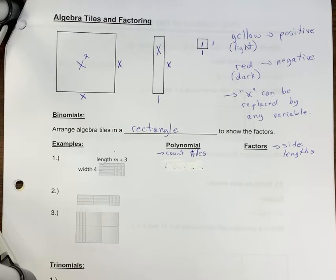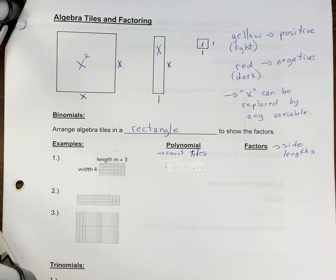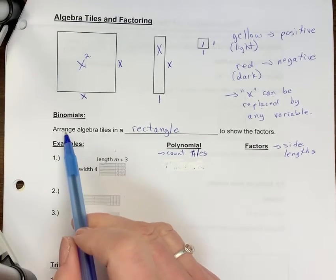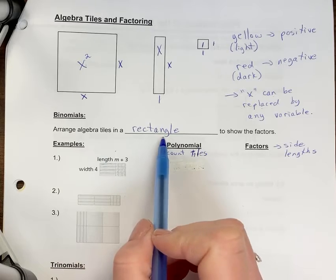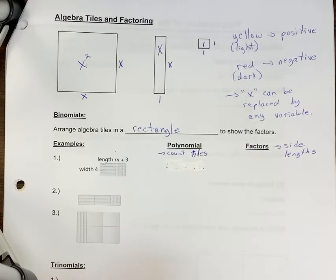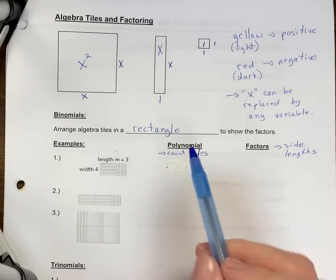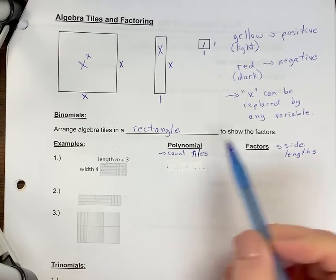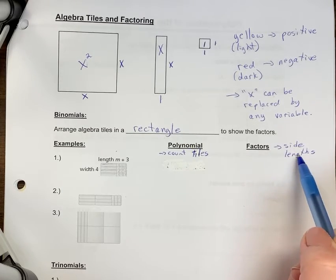All right, we're going to look at binomials and how we would figure out the factors and the polynomial of binomials. So to do that, you would arrange algebra tiles in a rectangle to show the factors. So it must be a perfect rectangular shape. The polynomials, we will just count what the tiles are. For the factors, we're going to look at the side length.